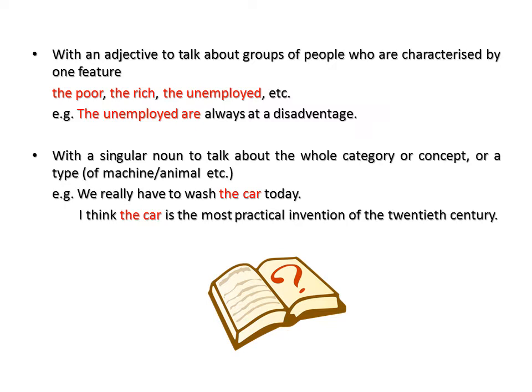The definite article is used with a singular noun to talk about the whole category or concept or a time. Compare the following sentences: 'We really have to wash the car today.' versus 'I think the car is the most practical invention of the 20th century.' In the first sentence, we are talking about one specific car, while in the second example, we are talking about the car as a concept — cars in general.